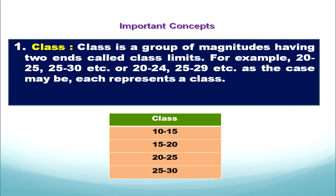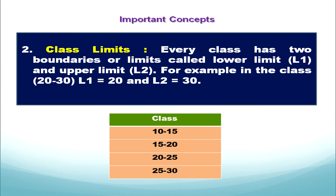The second concept is class limits. Every class has two boundaries or limits called lower limit and upper limit. In class 1, given as 10 to 15, the lower limit is 10 and the upper limit is 15. In the next class, 15 is the lower limit and the upper limit is 20.